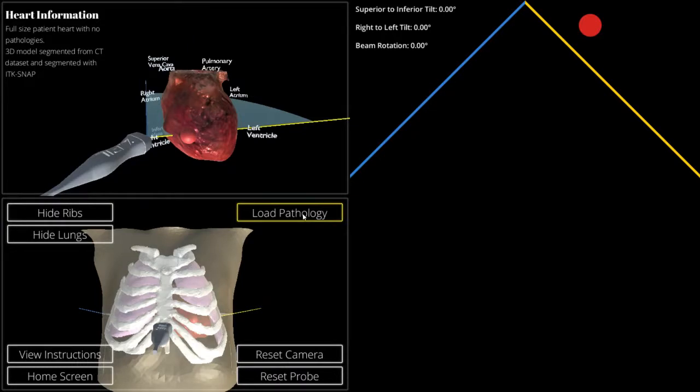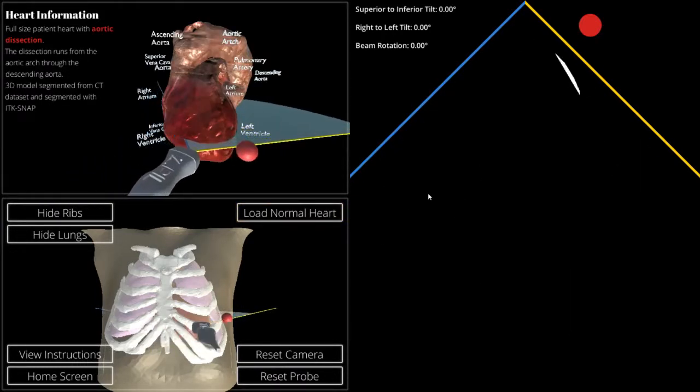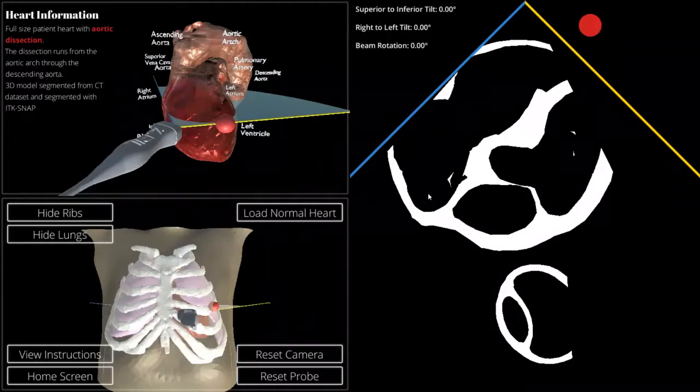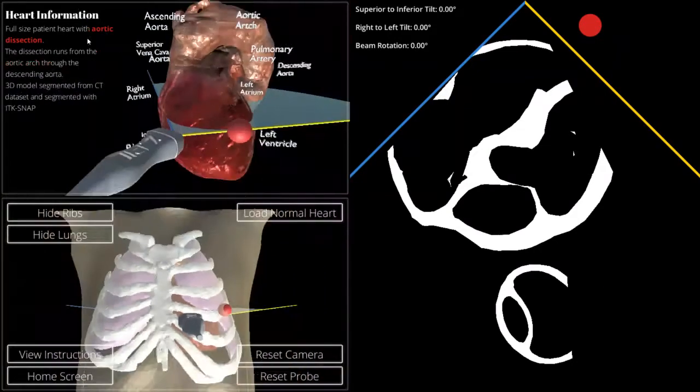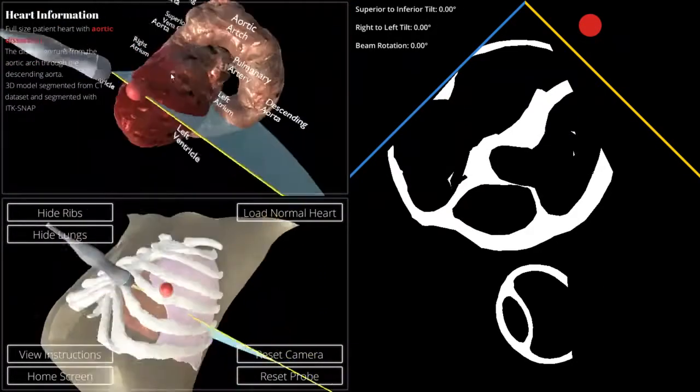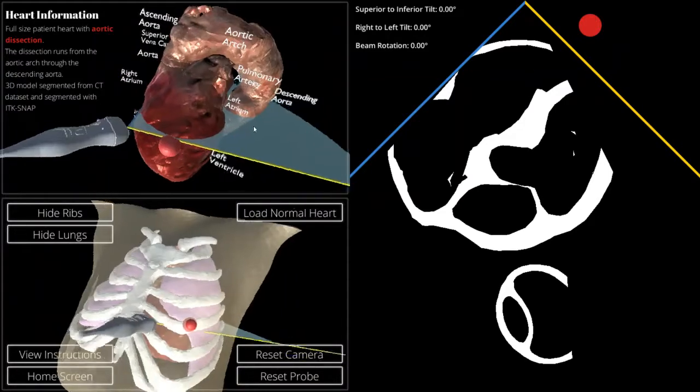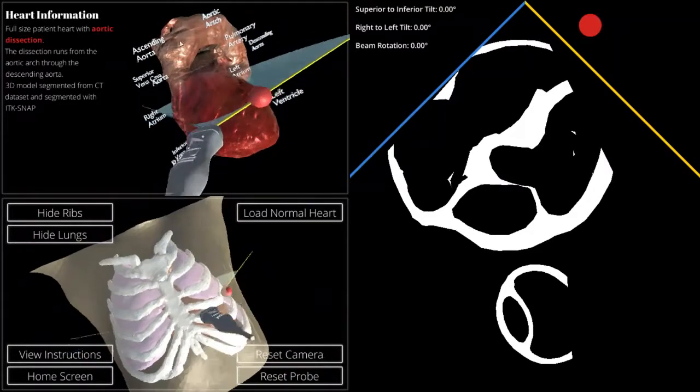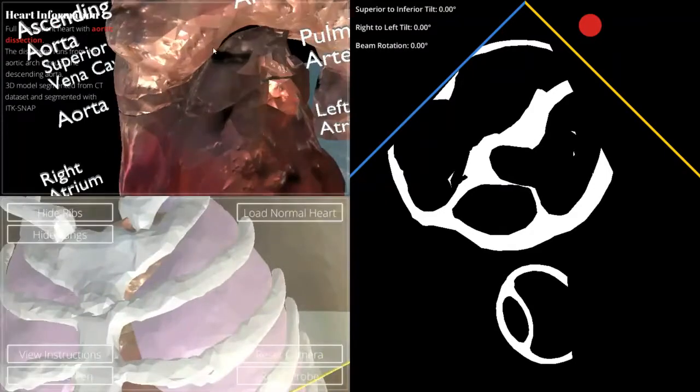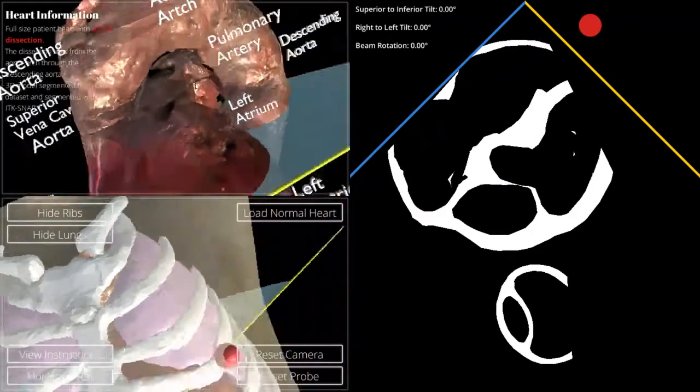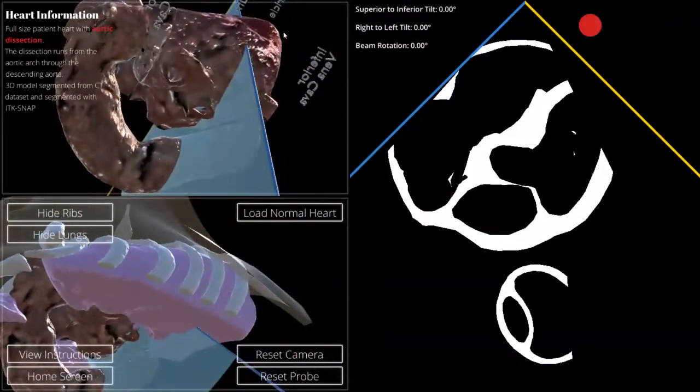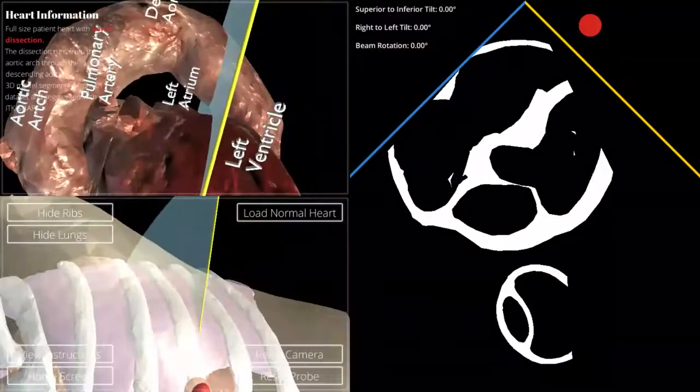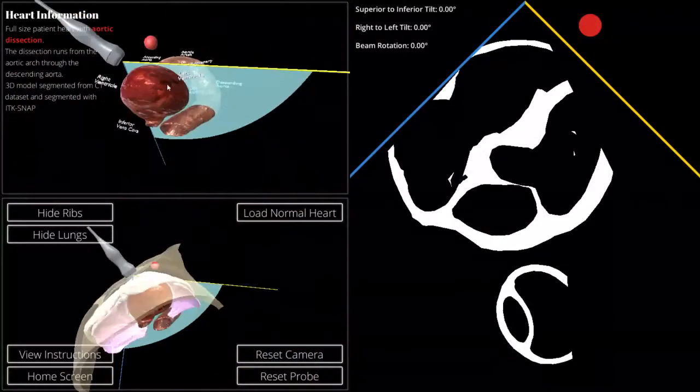The other feature that we built in is the ability to load different pathologies. In this case, we are loading the heart with an aortic dissection. As you can see, it is the full arch this time, just to showcase the aortic dissection. And the labels change as such too, so that you can see the ascending aorta, the aortic arch over here, and the descending aorta.